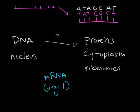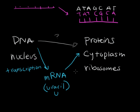Instead of sending DNA out to the cytoplasm to make proteins, we make a little messenger — a strand of mRNA — through a process called transcription. The RNA is made in the nucleus, then that molecule gets sent out to the cytoplasm to the ribosomes, which then use it to make proteins through a process called translation. So: making messenger RNA from DNA is transcription; sending that RNA to the ribosomes to assemble proteins is translation.